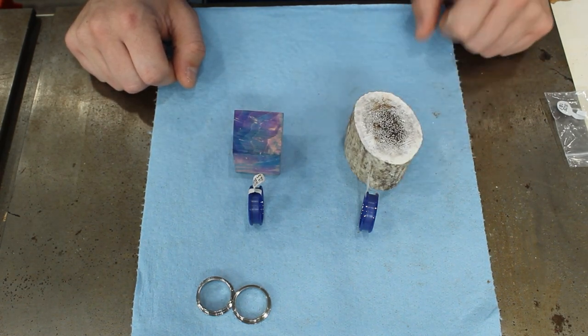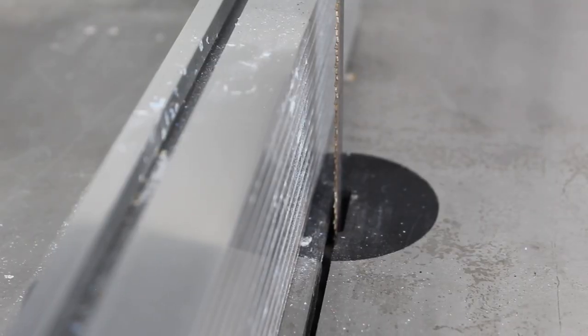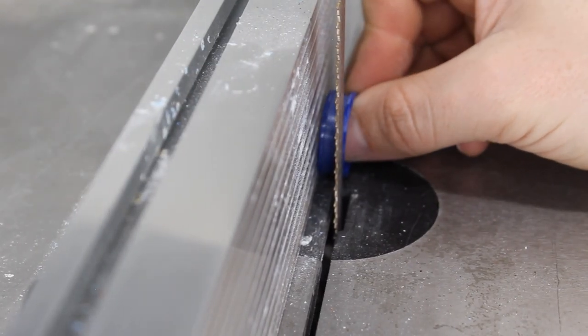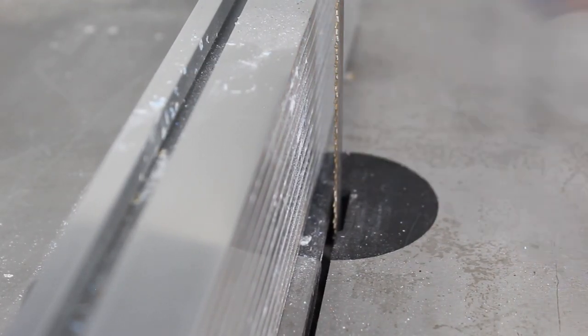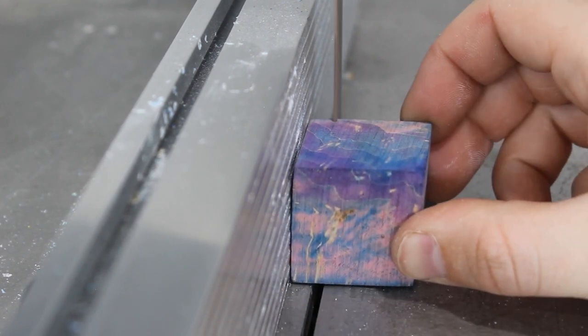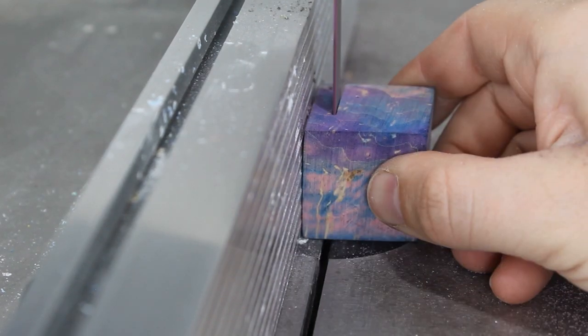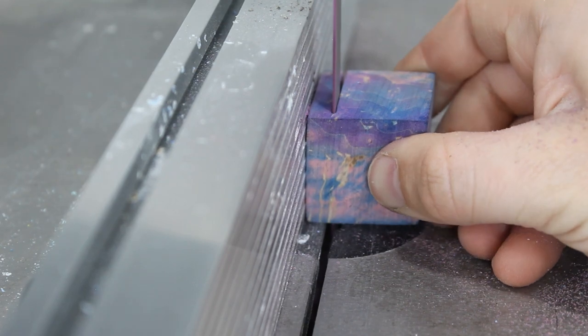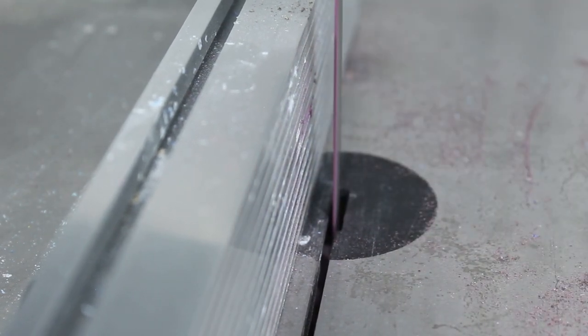We're going to work with this dyed burl and this antler. First thing we do, take these pieces to the bandsaw. I'm just getting a width a little bit bigger than the channel itself. I will cut the wood square and then we will do the same thing with the antler.